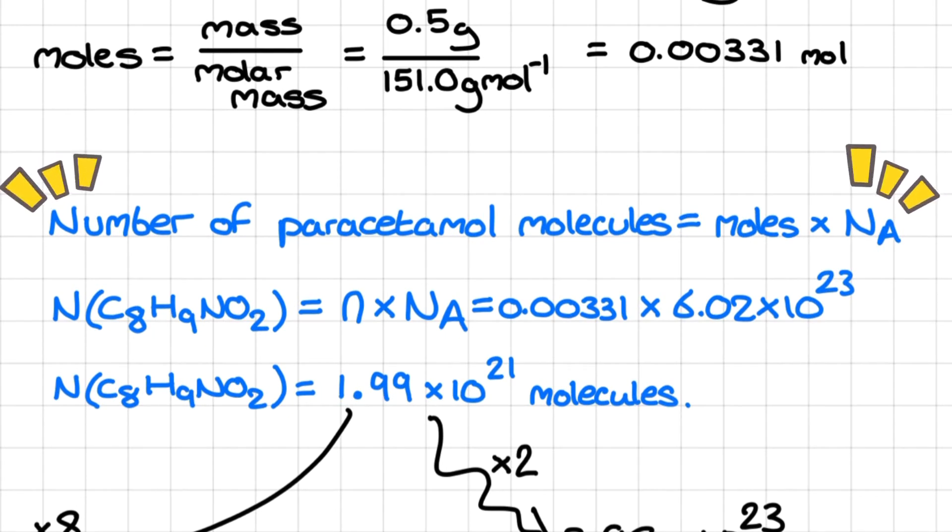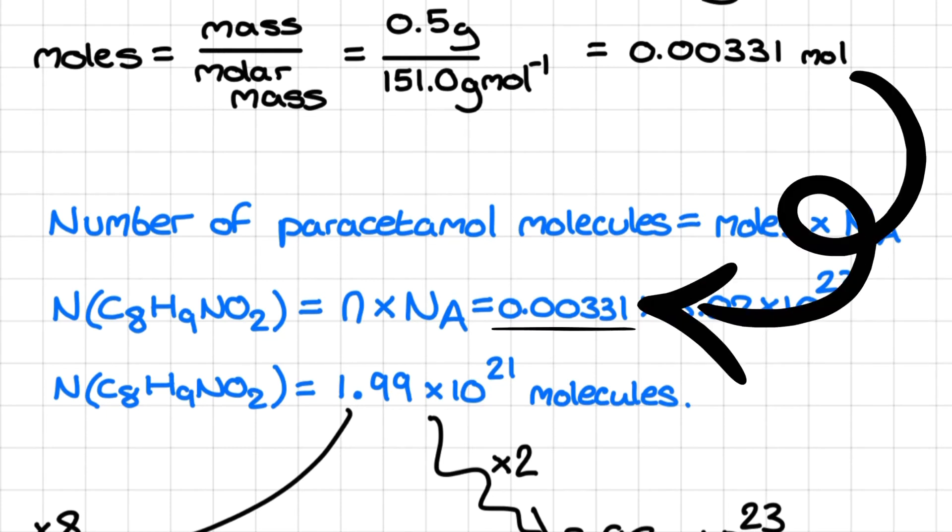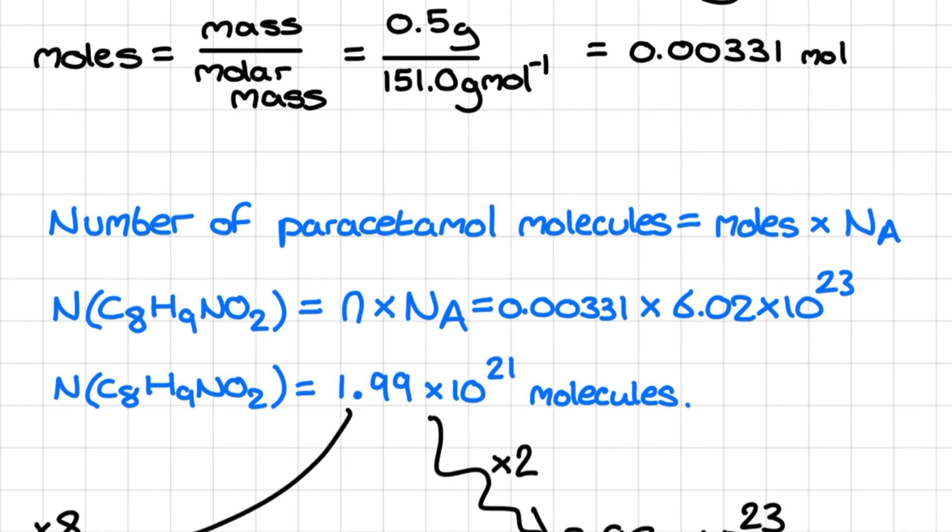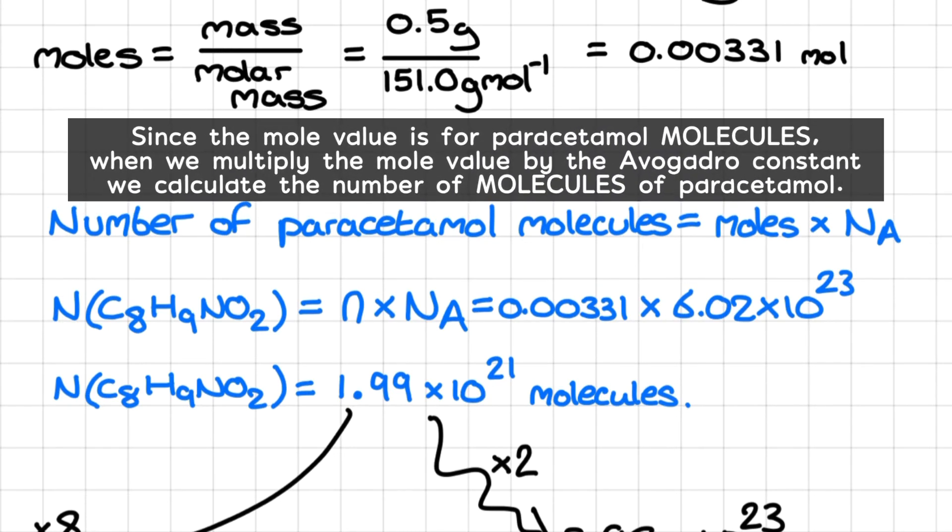Now that I have moles, the Avogadro constant can be used to determine other quantities. The mole value I have is for molecules of paracetamol. So if I multiply the mole value by the Avogadro constant, I will get the number of molecules in my sample.